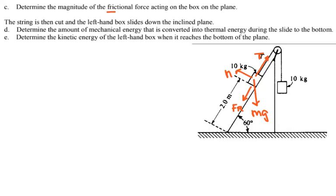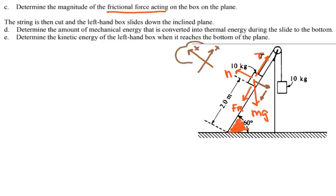For part C, determine the magnitude of the frictional force acting on the box on the plane. They don't explicitly state it is static friction, but you know it is static because there is no motion. I'm going to set up x and y coordinates along the incline: I'll choose positive x up the slope and positive y perpendicular away from the surface. Angle theta is given. This angle theta on the incline and the angle theta in the force decomposition are the same — let me explain why.